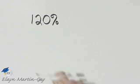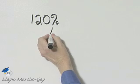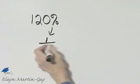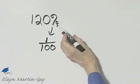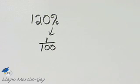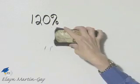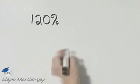Let's write this percent as a fraction or a mixed number. Keep in mind what percent means. Percent means per hundred, so what I'll do is replace the percent symbol by 1 over 100, and then I'll simplify the fraction.